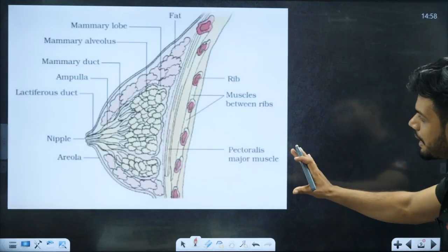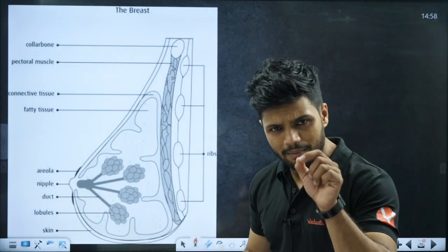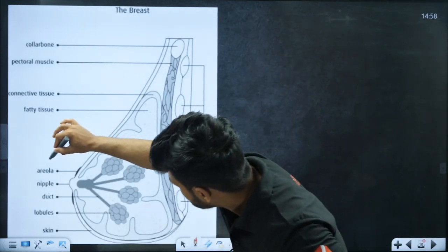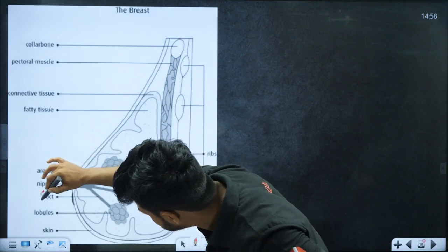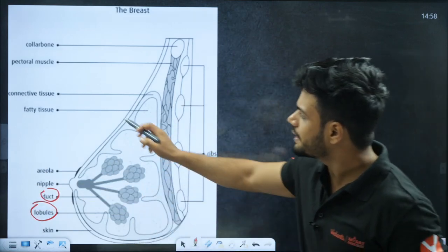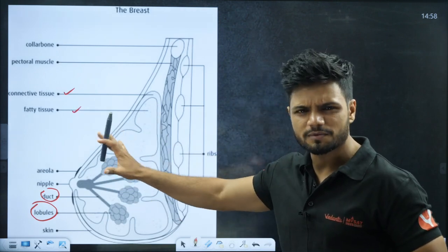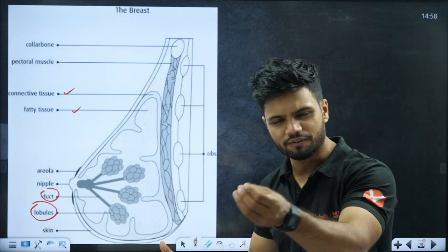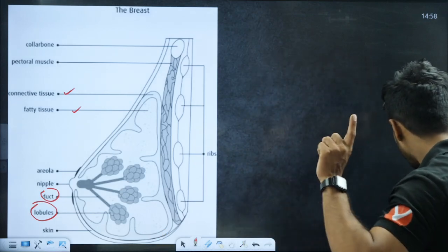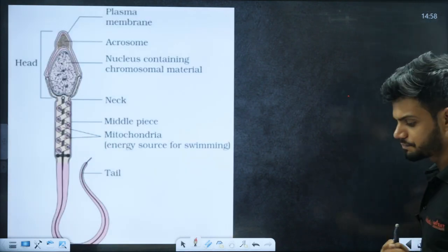Here's a simple way to draw mammary gland. You have to draw all the ducts, lobules, connective tissues, and fat tissue. This is a very important diagram. The structure of sperm has three main parts: the head, middle piece, and tail.